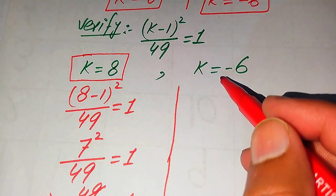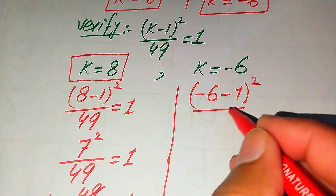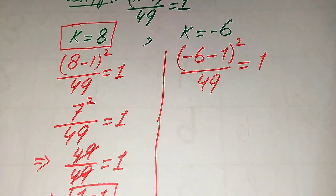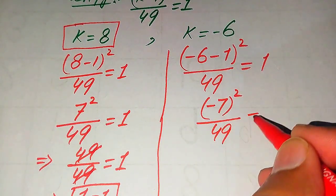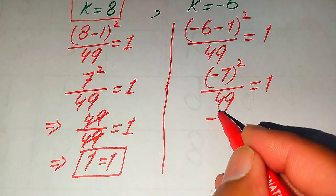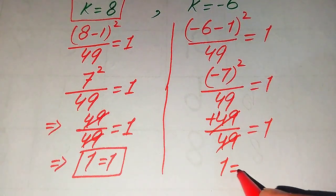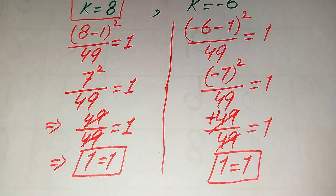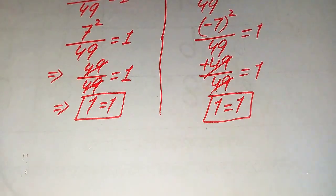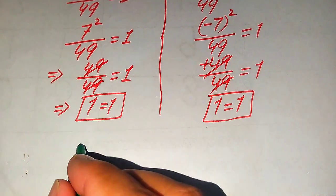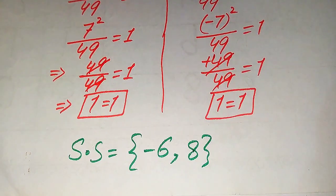Next we verify k equals minus 6. Substituting into the left hand side: (minus 6 minus 1) whole square divided by 49 equals 1. We have (minus 7) squared divided by 49 equals 1. Since (minus 7) squared equals positive 49, we get 49 divided by 49 equals 1. These cancel and we get 1 equals 1, so k equals minus 6 also satisfies the equation. The solution set is {minus 6, 8}.